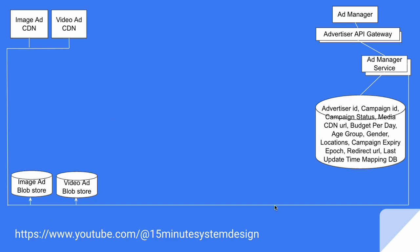All metadata info like advertiser ID, campaign ID, campaign status, media CDN URL, budget per day, age group, gender, locations, campaign expiry time, redirect URL if any, and the last update time mapping is stored in the ad manager DB pool.